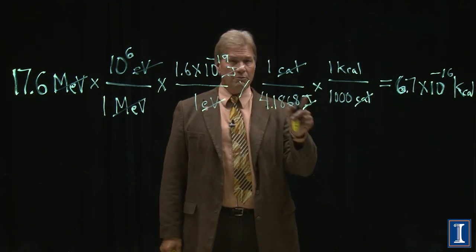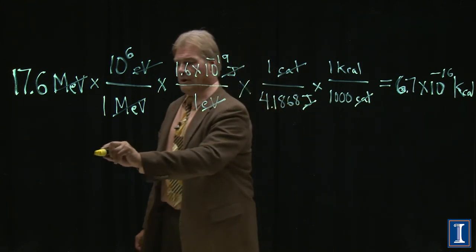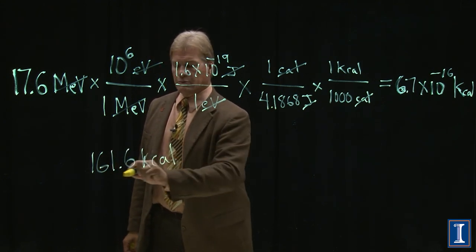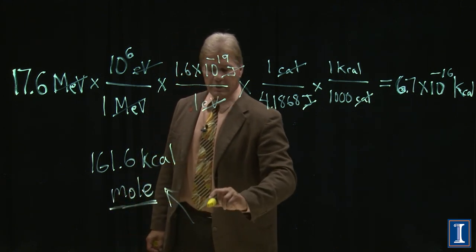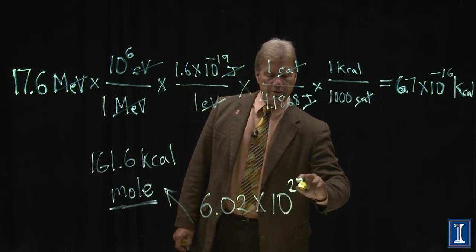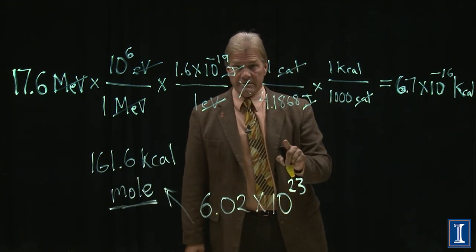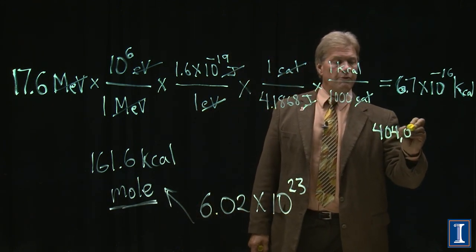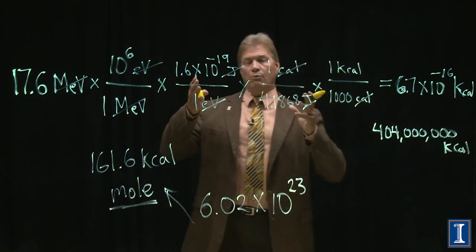This reaction was for one molecule. The 161 kilocalories that we got from that burning of the shot glass, this was for an entire mole. A mole is Avogadro's number of atoms, 6.02 times 10 to the 23rd. I have to multiply this number by this number. And when I do that, I get 404 million kilocalories.